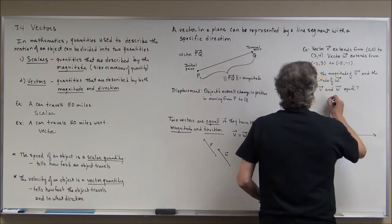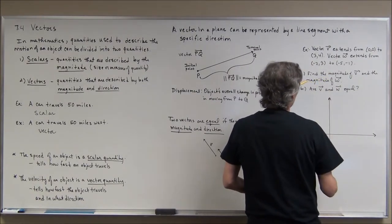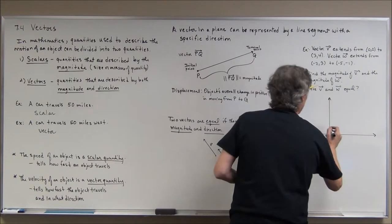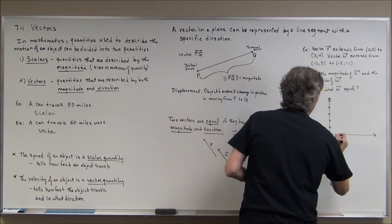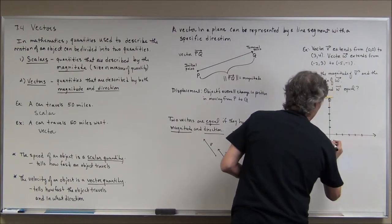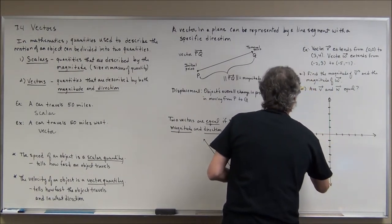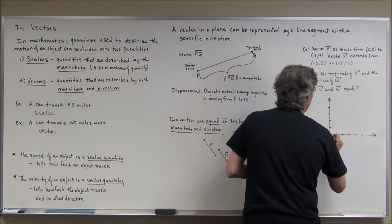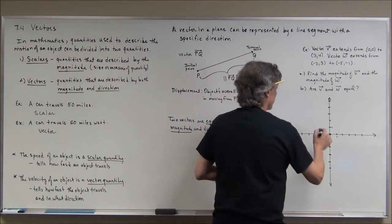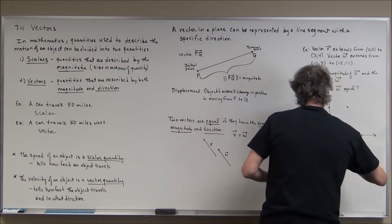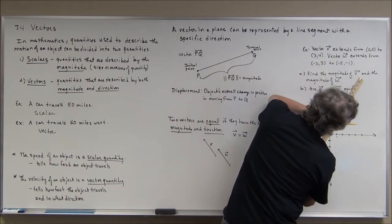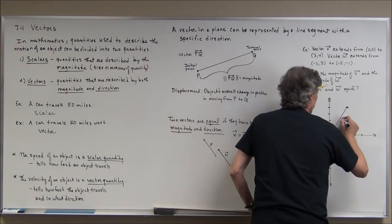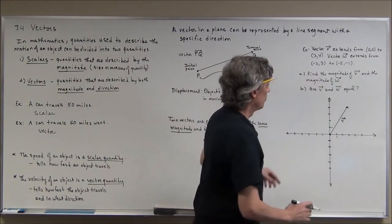It looks like -5 is the smallest x value, positive 3 is the biggest x value, positive 4 is the biggest y value. Vector v extends from (0,0), that's its initial point, to point (3,4), so three to the right, four up. Let me draw this - this would be vector v here.